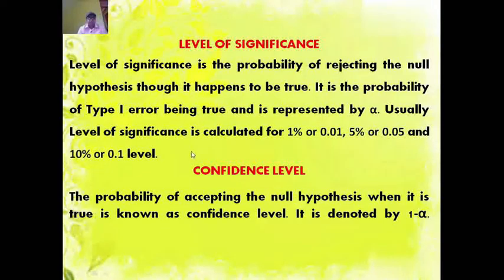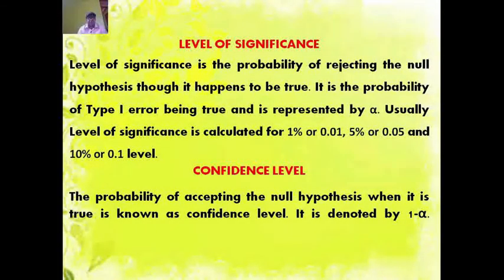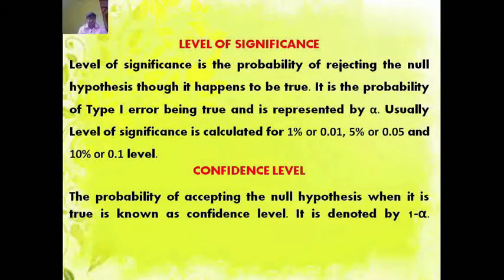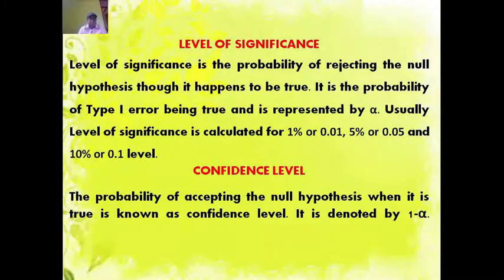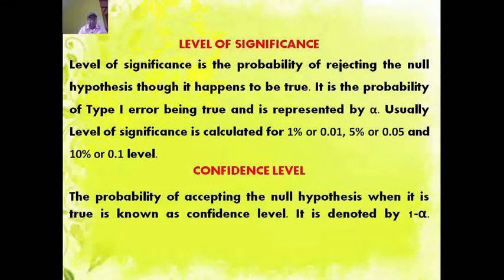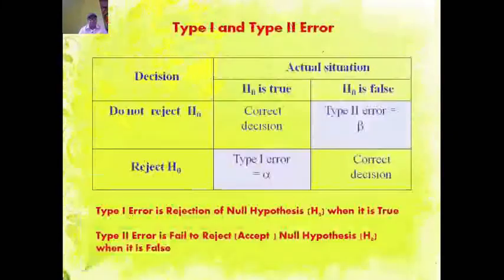Usually, level of significance is calculated for 1%, 5%, and 10% level. Confidence level is the probability of accepting the null hypothesis when it is true, and it is denoted by 1 minus alpha.